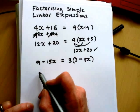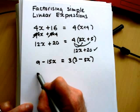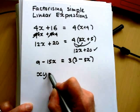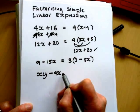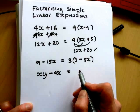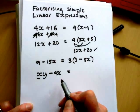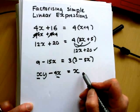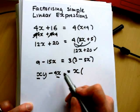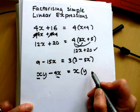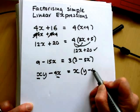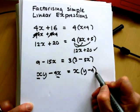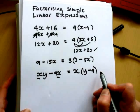Now to make it slightly more difficult, we might have two letters. We might have xy minus 4x. So in this particular example, we've got an x in both terms. So we can write the x on the outside of the brackets. And it's x times y for the first term, and x times minus 4 for our second term.